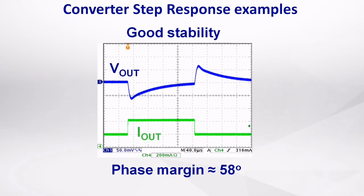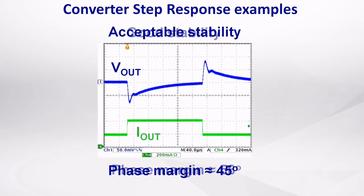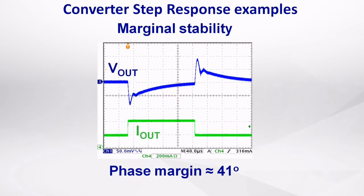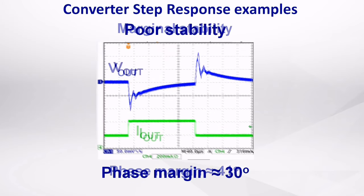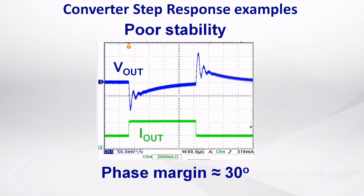Transient response with smooth recovery indicates good control loop stability, which means sufficient phase margin. When a bump is observed, the phase margin is lower but still ok. When significant bumps are seen, the phase margin may become marginal. And severe ringing in the waveform means low phase margin and poor control loop stability.